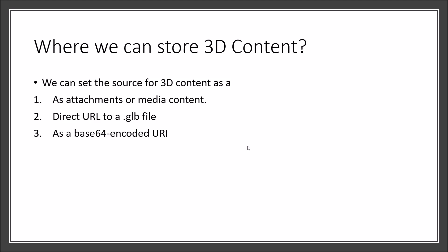Where can we store the 3D content? We can set the source as an attachment or media content, we can provide a direct URL to a GLB file, or we can pass it as a base64 encoded URL. During this session I am going to cover two methods: adding 3D content as attachment or media content, and using a direct URL to a GLB file. Let's get started with the first method — adding 3D content as attachment or media content.